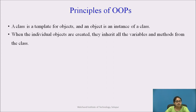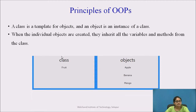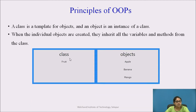A class is a template for objects, and an object is an instance of a class. When individual objects are created, they inherit all the variables and methods from the class. For example, Fruit is a general classification — the class — and objects consist of apple, banana, and mango. So apple, banana, and mango are instances of the Fruit class. Objects inherit all the variables and methods from the class, while the class is the template.